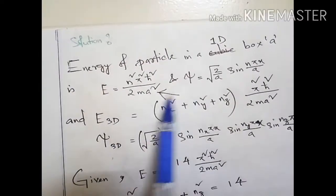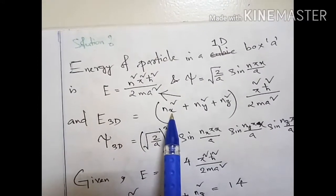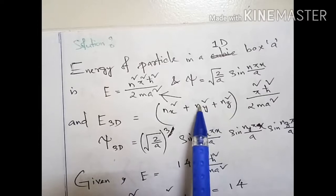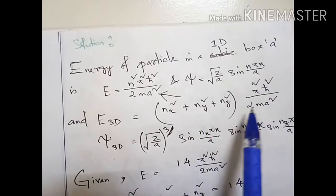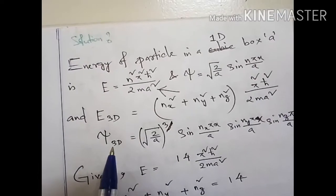In case of 3D, this n will be changing. In x direction it's nx, in y direction ny, and z direction nz. So the energy is (nx² + ny² + nz²)π²ℏ²/(2ma²).